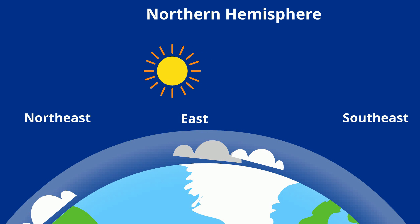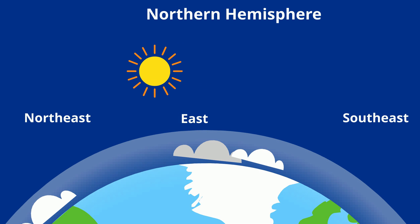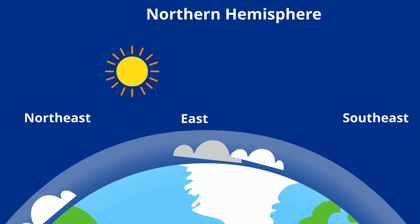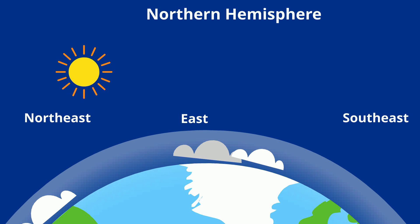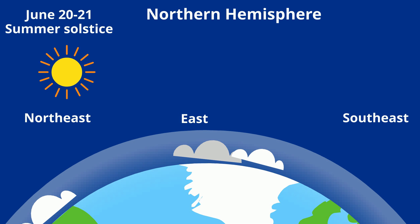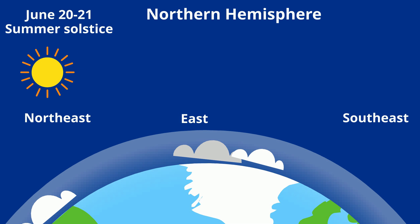Moving forward, the sun then starts rising a little more northeast each day until June 20th or 21st, again depending on the year. This is called the summer solstice, and it is the longest day of the year.